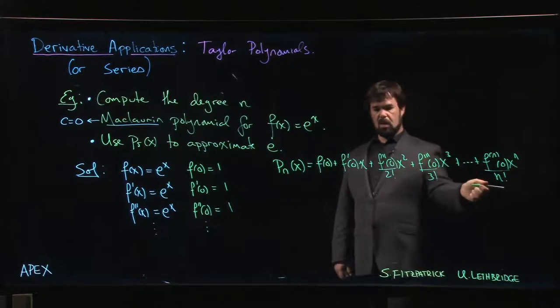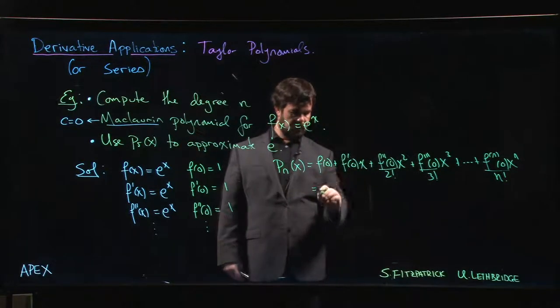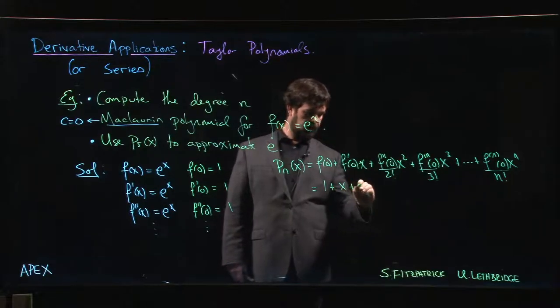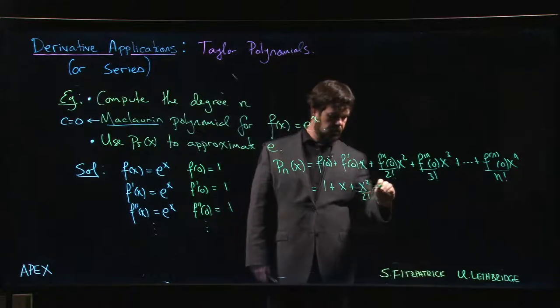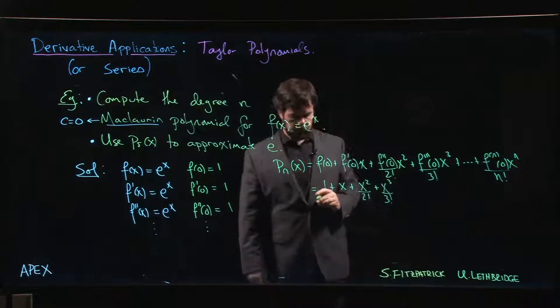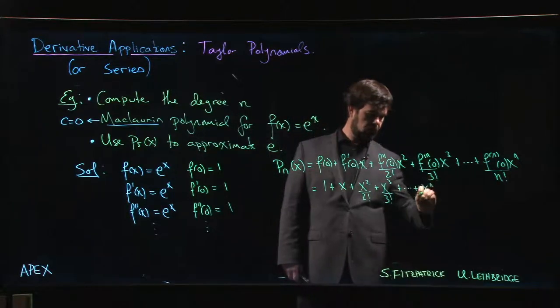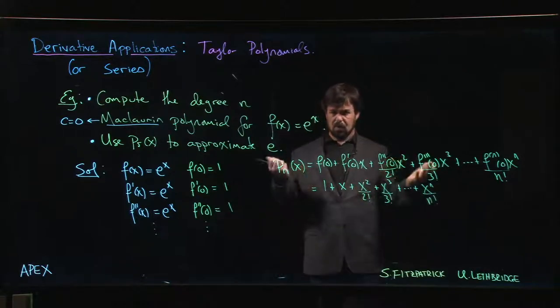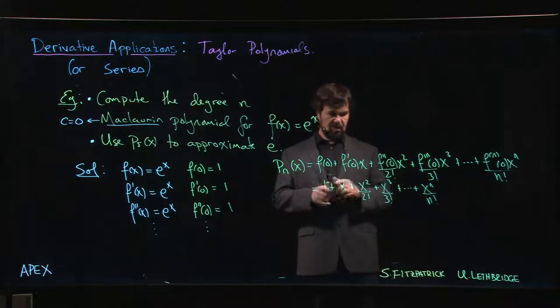But now we know all these derivatives are just 1. So what we get is 1 plus x plus x squared over 2 factorial plus x cubed over 3 factorial, and so on down to x to the n over n factorial, which is a fairly nice, simple pattern, easy enough to follow.